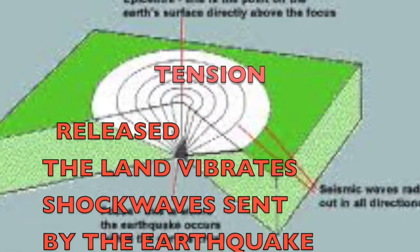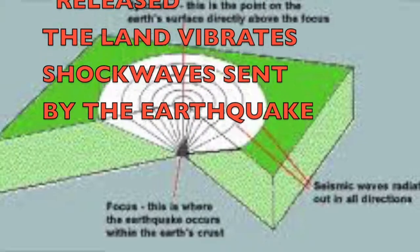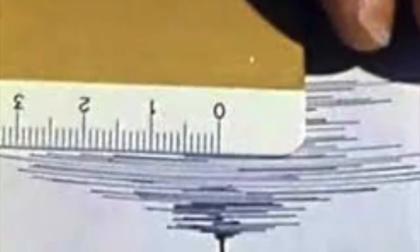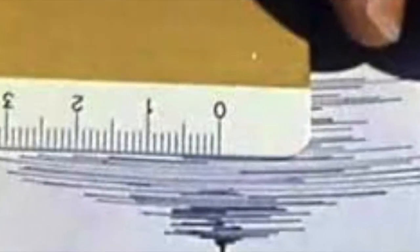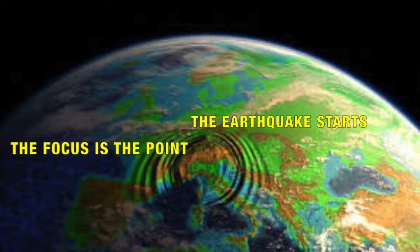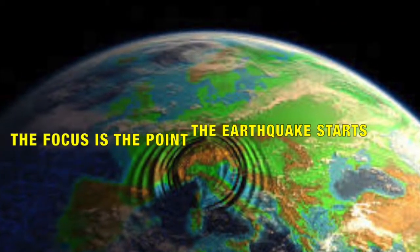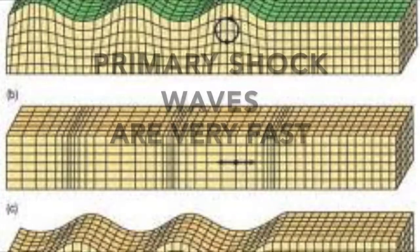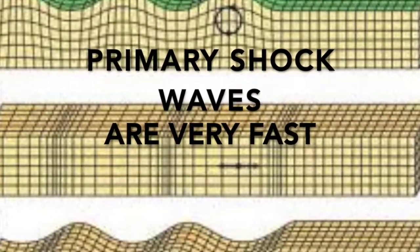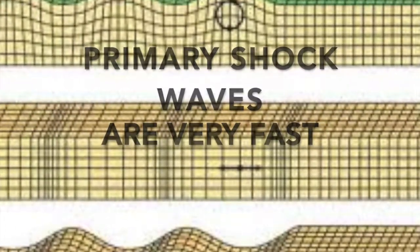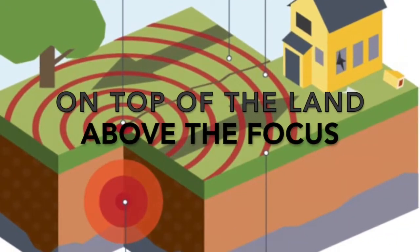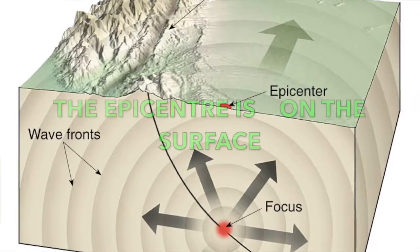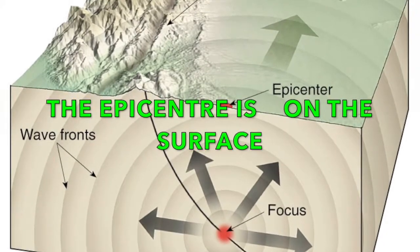Tension release, the land vibrates by the earthquake. The focus is the point the earthquake starts, the primary shockwaves are very fast. On top of the land above the focus, the epicentre is on the surface.